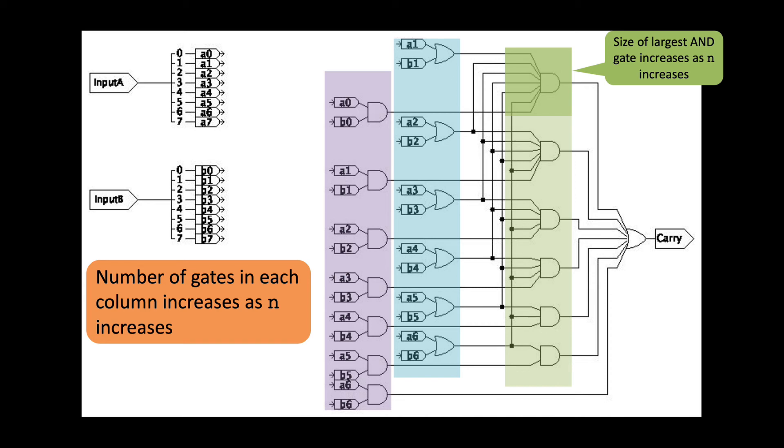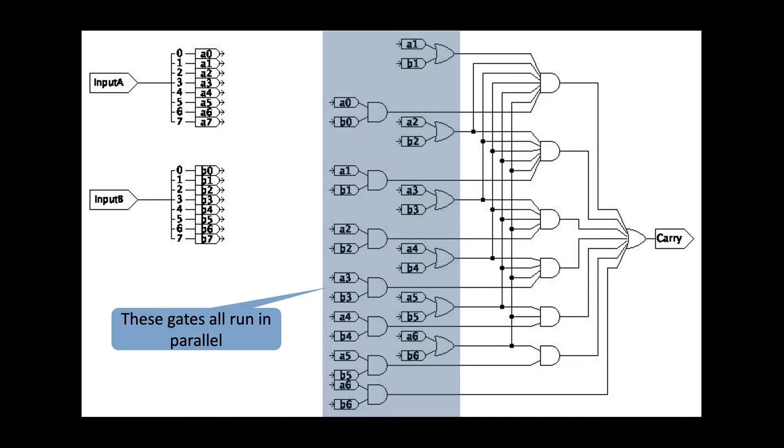First, notice that all of the generate and propagate gates run in parallel. They all just depend directly on the input A and B. Therefore, they contribute at most one gate delay or a big O of 1, a constant amount of time. Next, all of these gates also run in parallel.